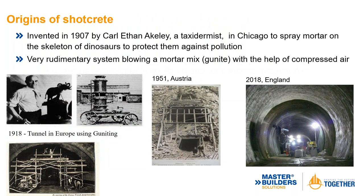The history of shotcrete goes way back to 1907, where Carl Akeley — a taxidermist in Chicago — sprayed mortar on skeleton bones to protect them against pollution. You can see Carl Akeley and some of the guns that were used, called a double chamber — actually still used in the refractory business today. Similar mechanical and technical aspects are used to this day. The technology evolved from that early spray unit in Austria all the way up to the Crossrail project in England, where they're using robotically sprayed shotcrete and waterproofing membranes.